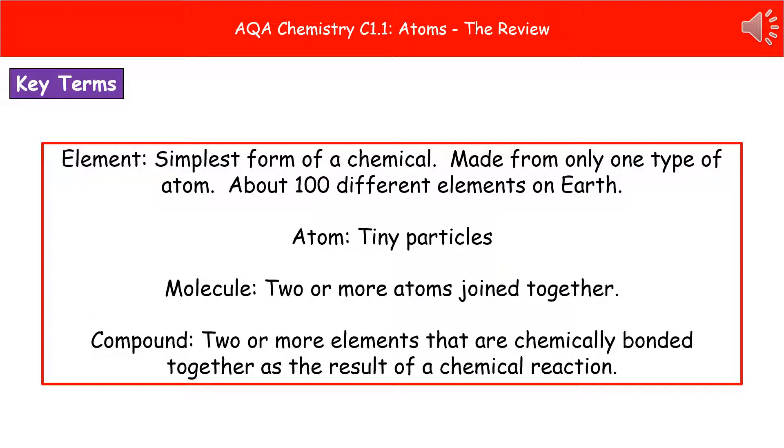So the first one is the word element, which quite simply is the simplest form of a chemical and they're made from only one type of atom and we've got about 100 different elements here on earth.